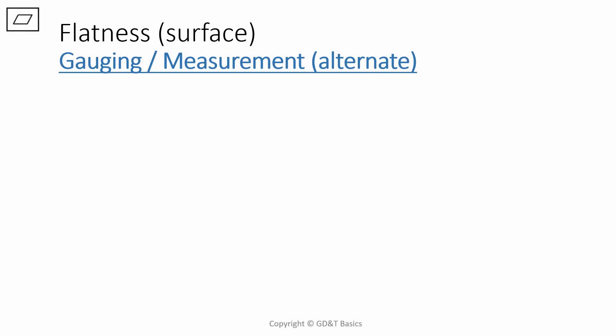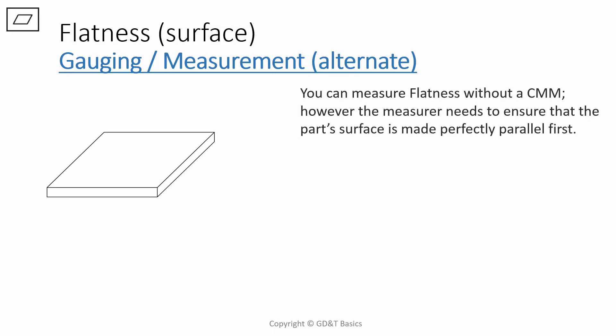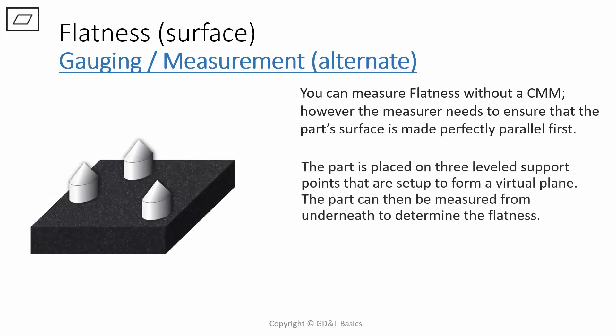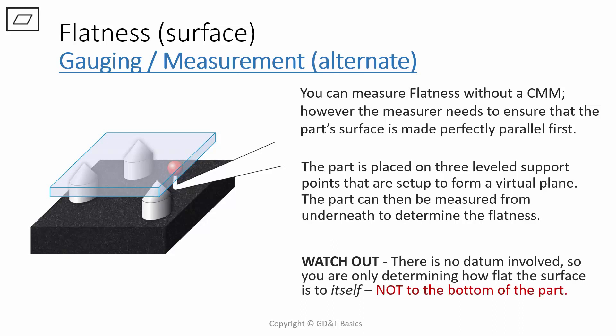Now, there is an alternate way to measure flatness without using a CMM. The measurer needs to make sure that the part's surface is made perfectly parallel first if you are going to measure without a CMM. The part can first be placed on three level support points that are set up to form a virtual plane. Then you can measure from underneath to determine the flatness with a feeler or height gauge. Now watch out! There is no datum involved, so you are only determining how flat the surface is to itself, not to the bottom of the part. This also is a fairly less accurate way to measure flatness because these three support points might be placed at high points or low points on your surface and you might be getting a completely different reading. CMM is always the best measurement for flatness because it can map out the surface and is more accurate.